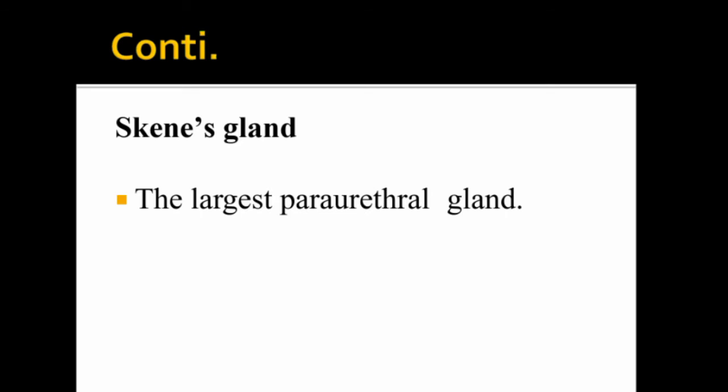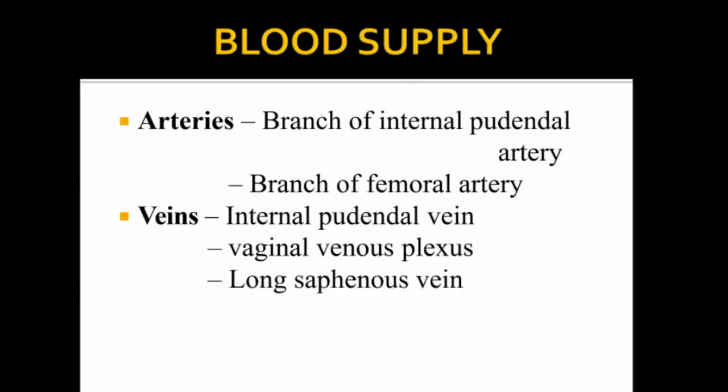The next glands are the Skene's gland, which is the largest periurethral gland. The blood supply of the external genitalia includes branches of the internal pudendal artery, branches of the femoral artery, the internal pudendal vein, and the vaginal venous plexus.